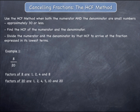Likewise, the factors of 20 are 1, 2, 4, 5, 10 and 20. The highest common factor of 8 and 20 is the largest number that is common to both lists. In this case it is 4.